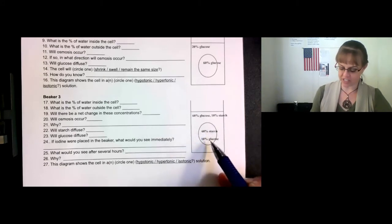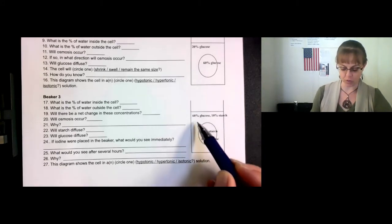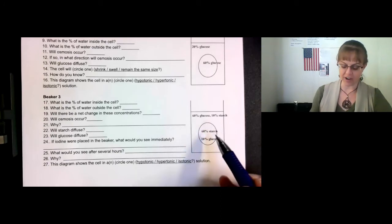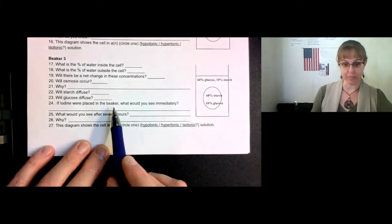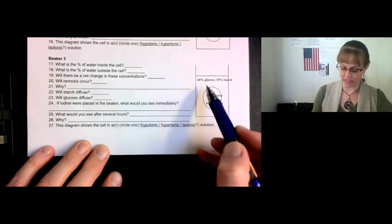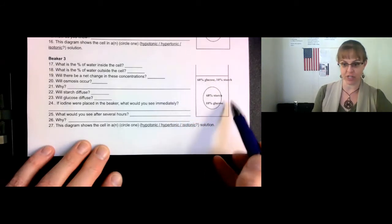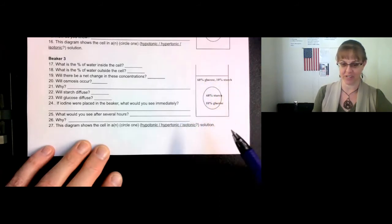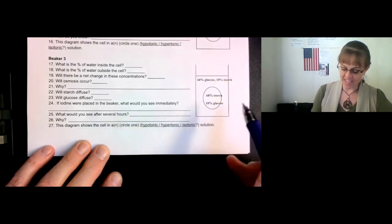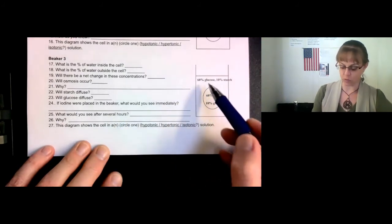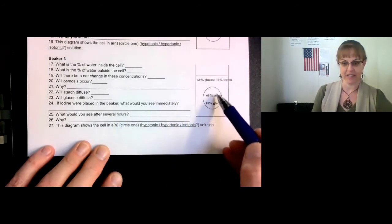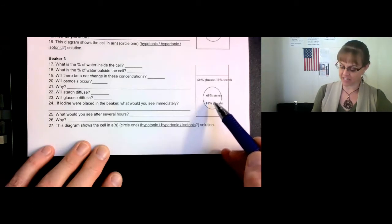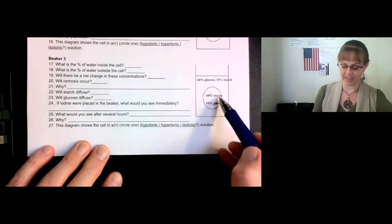Remember, glucose and starch cannot move through the membrane. Only water and iodine can move through the membrane. So when you put iodine in the beaker, the iodine will immediately be just in the solution at first, turning this the color it would turn if there's starch present. Then several hours later, the iodine would diffuse through the membrane into the cell and it would turn the inside of the cell the color it would turn when there is starch.